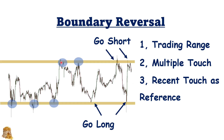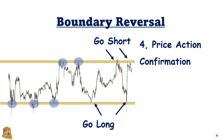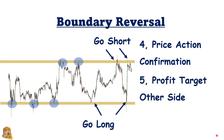We can also use the most recent touch as a reference to observe the market behavior. It is very important when the market reaches the support or resistance levels that we observe the price action for confirmation of whether the market can reverse or not, because the market can really penetrate the support or resistance levels. Regarding the profit target — if we can clearly see the support or resistance levels, we can set the profit target to be the other side. Otherwise, we can use realistic ones like N times the risk you have. Even if we have clearly seen the support or resistance levels on the other side, it's possible that the market cannot reach it, so your profit target should be very realistic.